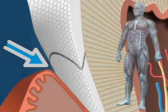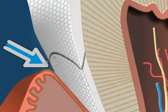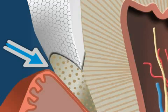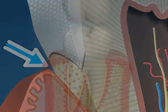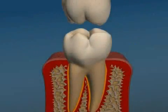Dental enamel is the hardest substance in the human body. In the enamel cement border area, the geometry of the enamel prisms dissolves, creating weak spots in the enamel at exactly the point where the dental enamel transitions into the root cement.